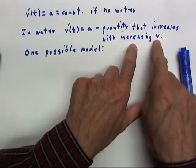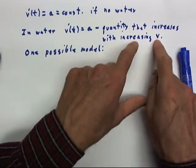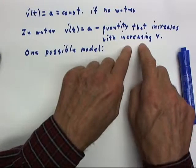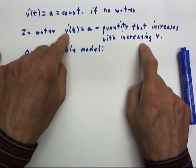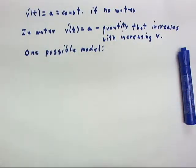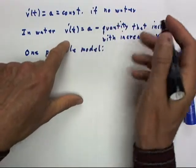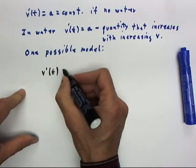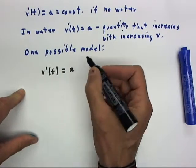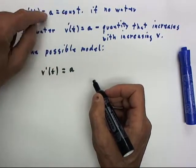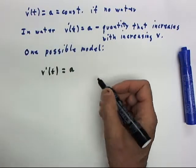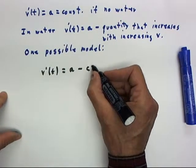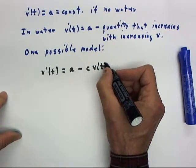Because as v increases, we have to move more and more water out of the way every second, and this causes the velocity to build more and more slowly. So one possible model of this type would be v' of t equals a, the acceleration that the ball would have if there was no water, minus some constant c times v of t.